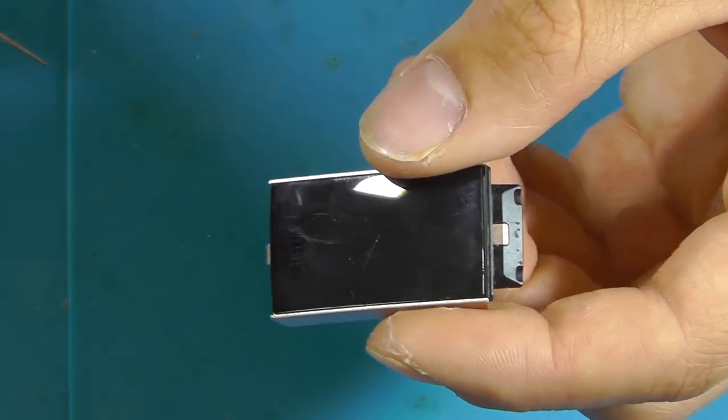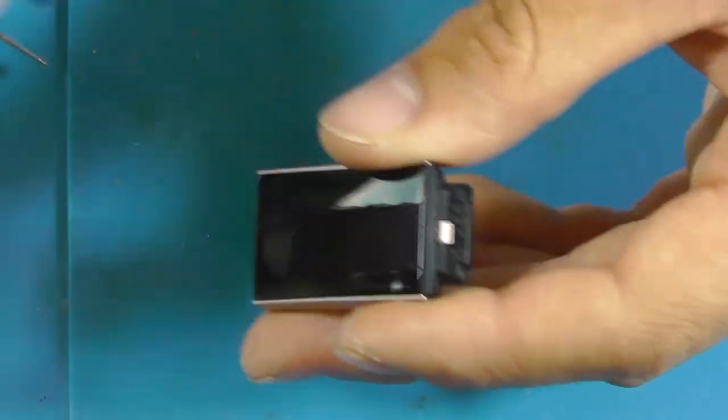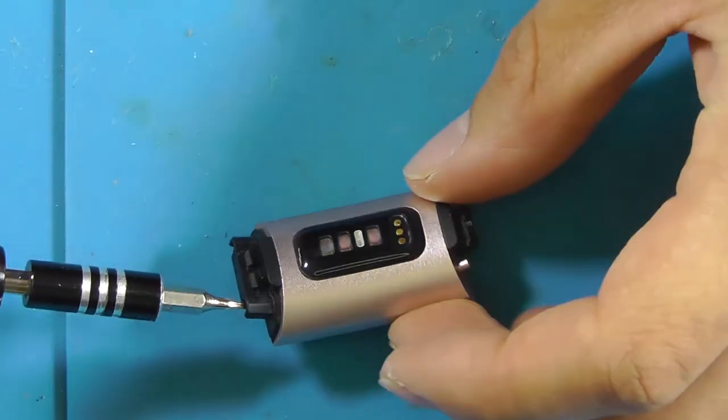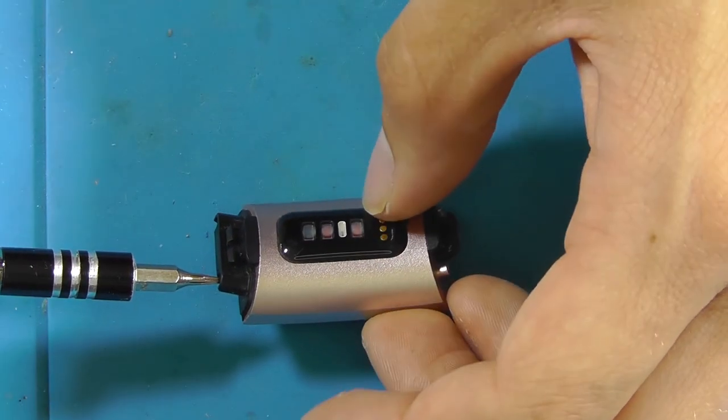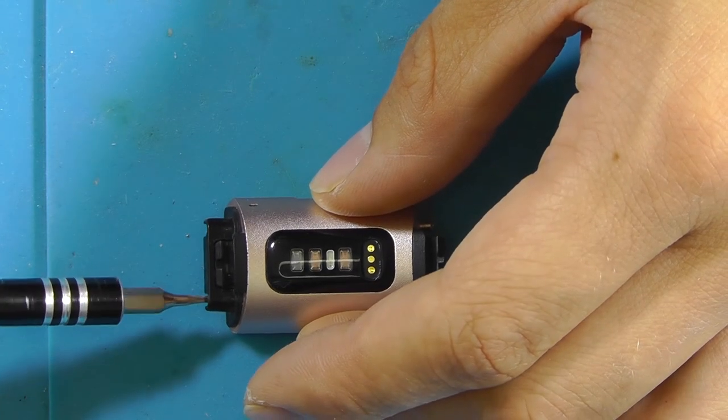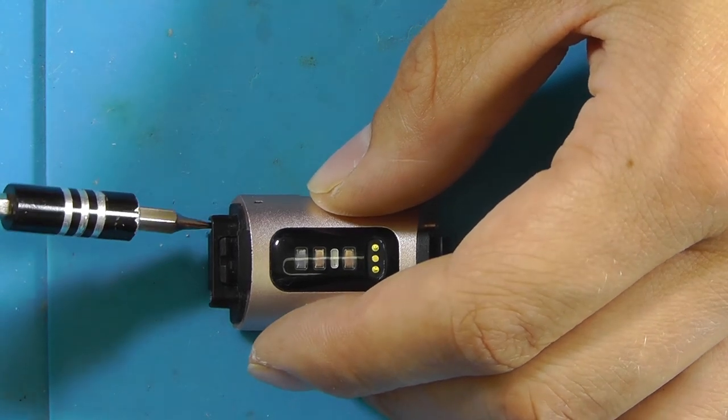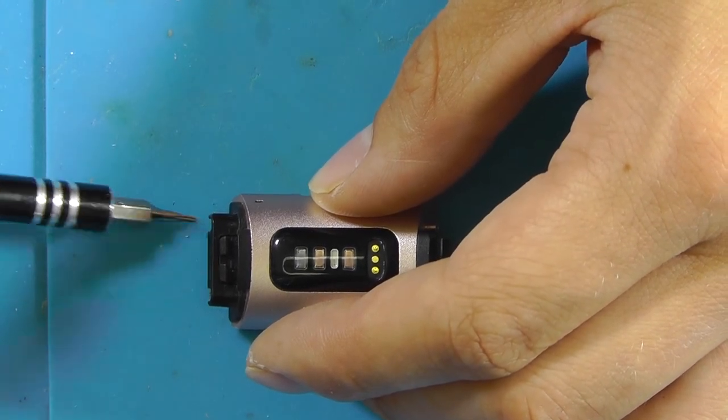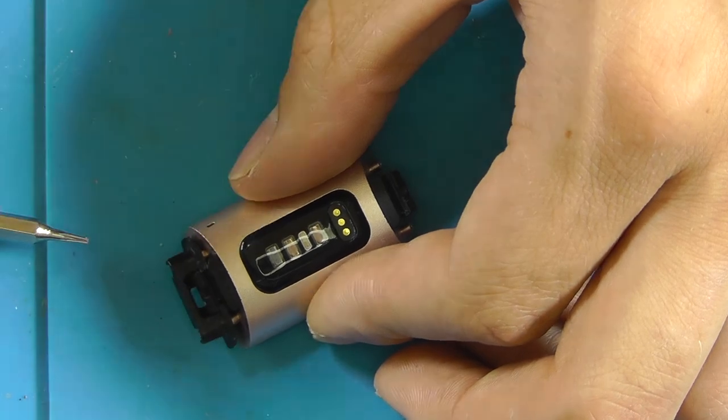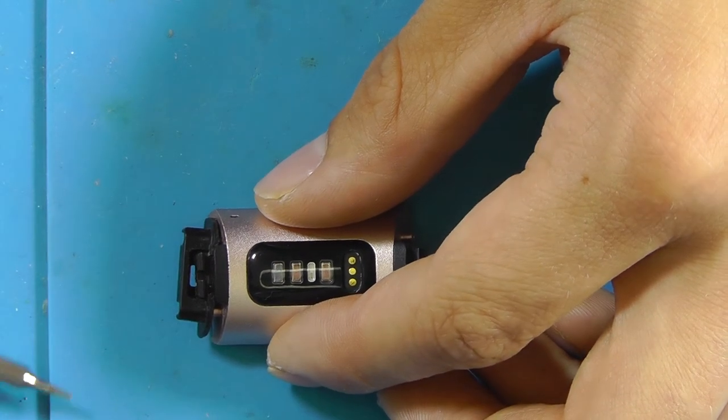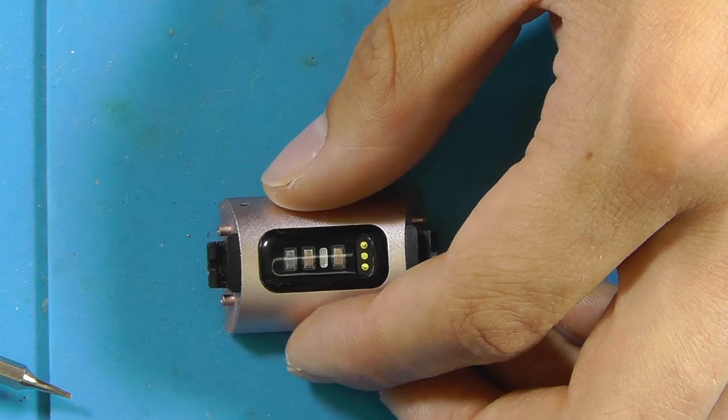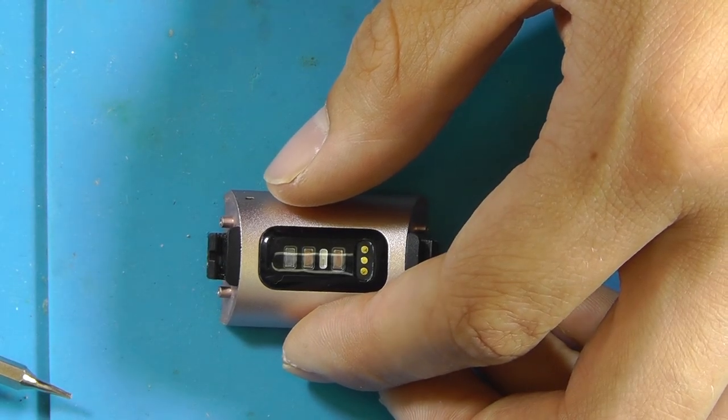So the one with the do not throw away battery icon is at the top. Now I can already see, I don't think you can, but I can already see some condensation happening over here. That's not a good sign.